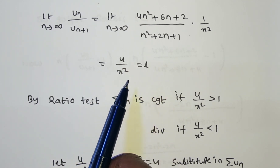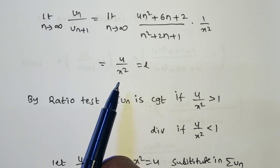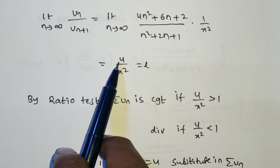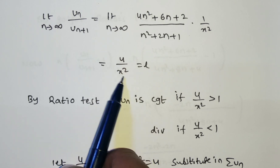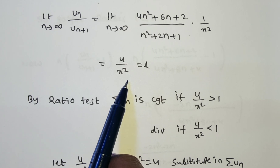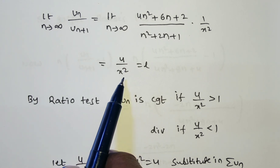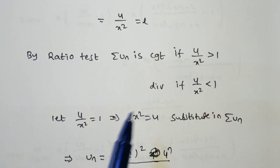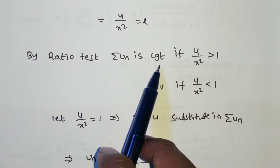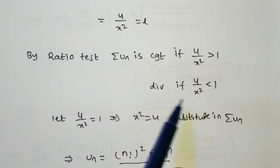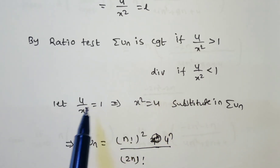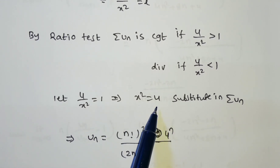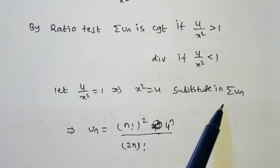Now, what about the value of x? Since x is positive, x² may be less than 4, greater than 4, or equal to 4. So 4/x² may be greater than 1, less than 1, or equal to 1. If 4/x² > 1 the series is convergent; if 4/x² < 1 the series is divergent. Now consider the case 4/x² = 1, which implies x² = 4. We must substitute this value back into the series.